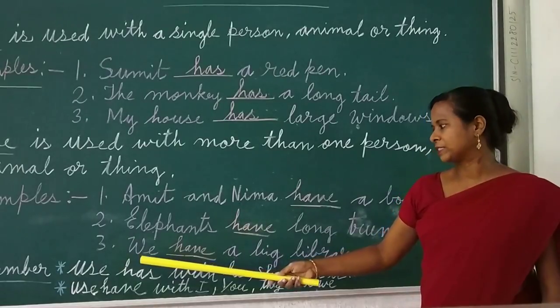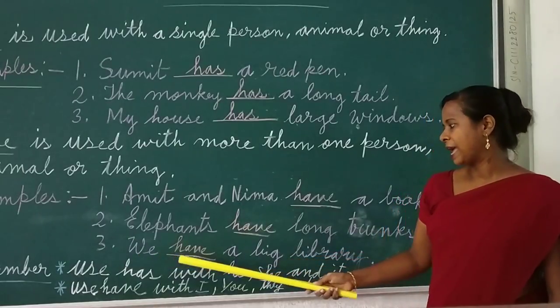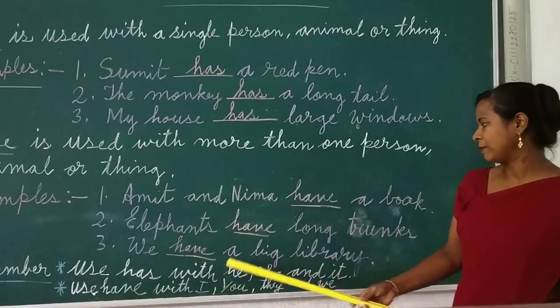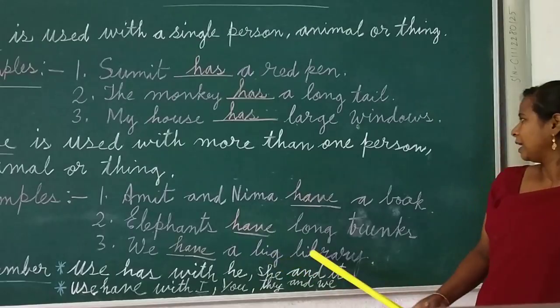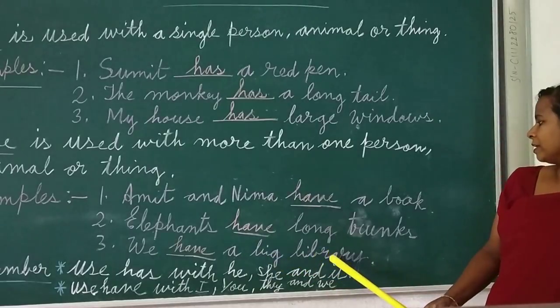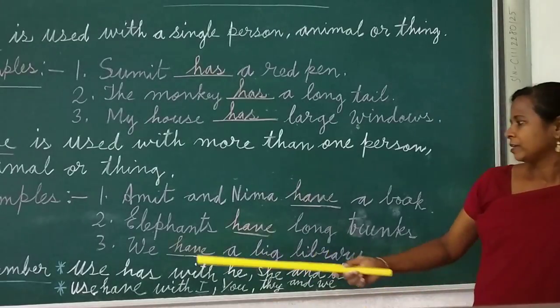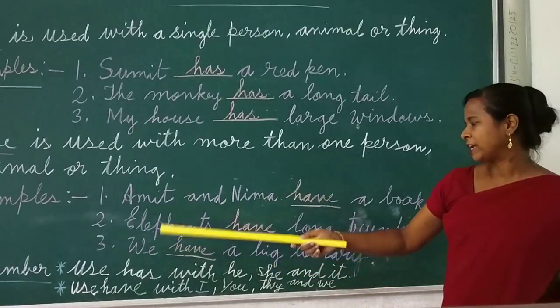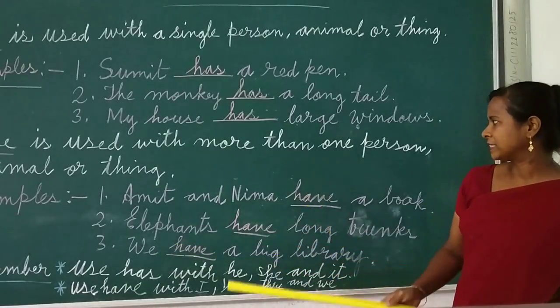Number three: 'We' — we also means more than one person. We have a big library. So more than one person — we use 'have'.